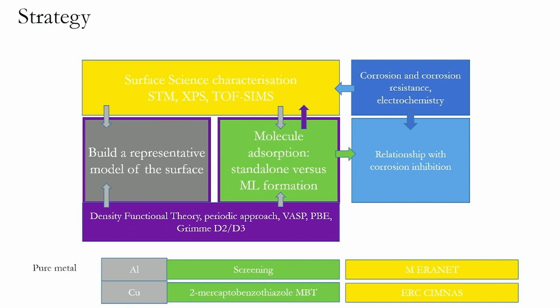In this context, in our group, we use a combined model approach, both experimental and based on DFT calculations at the atomic scale. We study pure metals before studying alloys. We do corrosion tests, then surface characterization of the metal before and after corrosion, and we also study organic inhibitors.